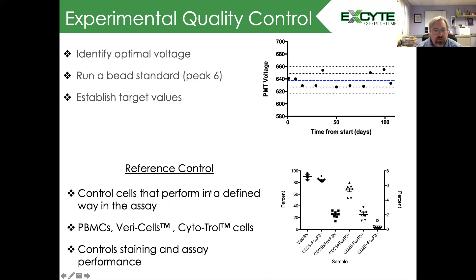In addition to that, you can run reference controls. Reference controls are cells that perform in a defined way in your assay. This can include frozen PBMCs. This can include the Veri-Cells. These are LoFly cells from BioLegend. Or the Cytotrol cells, which are from Beckman Coulter. Or any other control that you feel will reproduce the quality data, both performing how the staining works and how the assay performs. And here's an example of that type of data where we're looking at a wide variety of metrics establishing a range that we would expect performance on these systems.